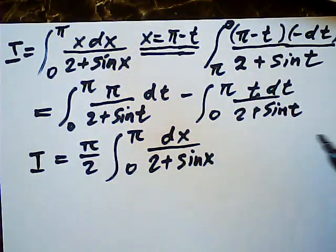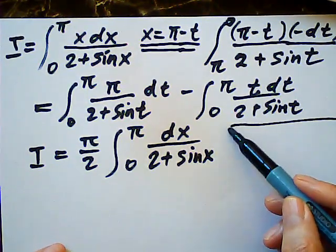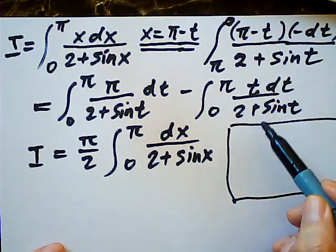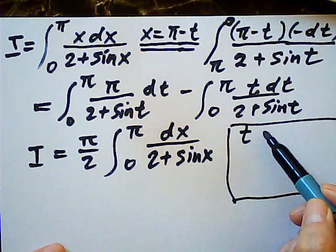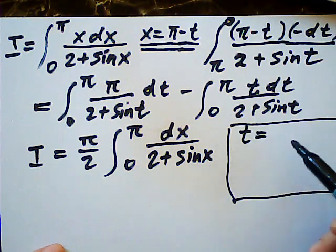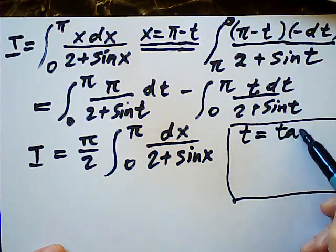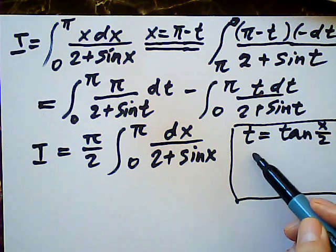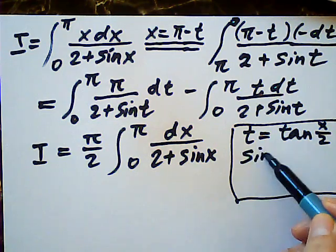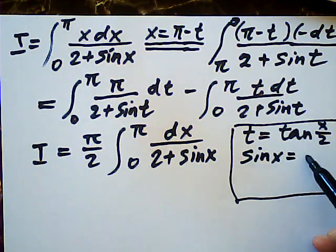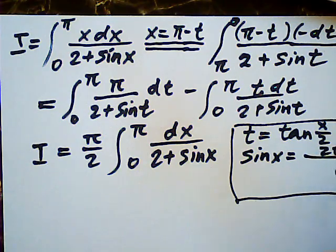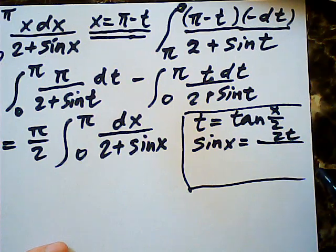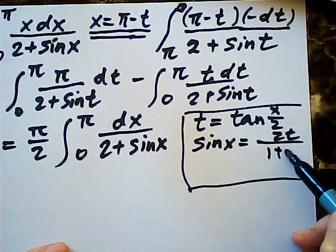Now then see, obviously we are using a substitution. Let t again, that's another t, t equal to tangent half x. Then sine x is equal to two t over one plus t square, right?